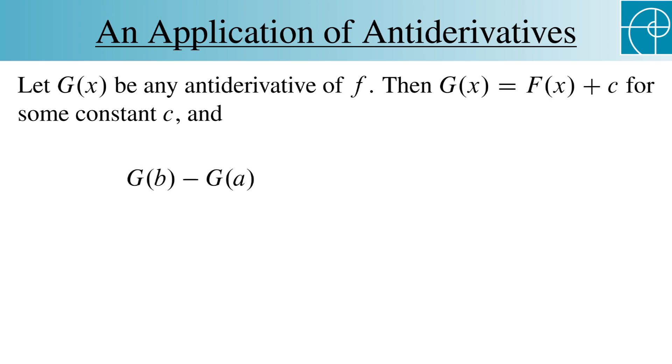And G of B minus G of A equals capital F of B plus C minus capital F of A plus C. The C terms cancel, leaving capital F of B minus capital F of A. Now capital F of A is just the integral from A to A, which is zero.